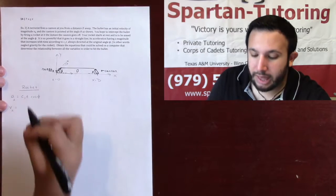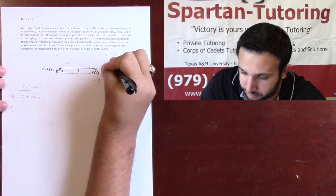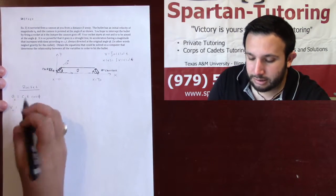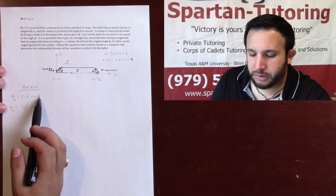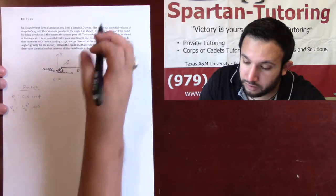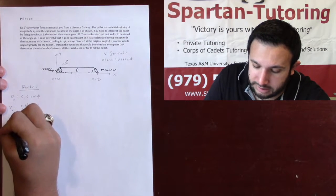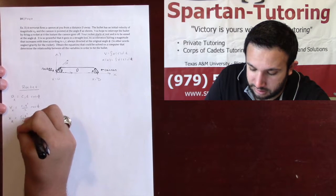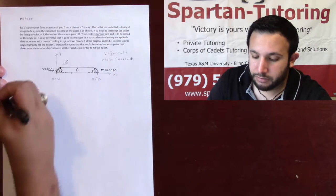Velocity is the integral of acceleration, and position is the integral of velocity. Integrating c1t·cos(phi) with respect to t gives c1t²/2·cos(phi). Remember, you're integrating t — c1 and phi are just constants. The rocket starts at rest, so the initial velocity is zero, meaning no constant term. Integrating velocity gives the x position of the rocket: c1t³/6·cos(phi). Since I set the rocket at the origin, the initial x position is zero.